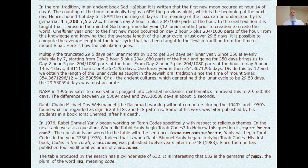The meaning of the Vahad can be understood by its gematria: Dalet is 4, Reish is 200, Aleph is 5, and 24 — it means day 2, hour 5, plus 204 parts of the hour. In the oral tradition, it is taught that it arose in the mind of God one primordial year — which is 12 lunar months — prior to creation, to create the world. One lunar year prior to the first new moon occurred on day 2, which is Monday, hour 5, the 5th hour of the day, plus 204 parts of the hour.